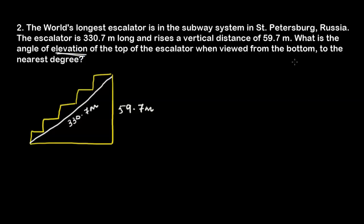The question wants us to find the angle of elevation of the top of the escalator when viewed from the bottom. Somebody is standing at the bottom looking at the top. The angle of elevation is the amount of angle above the eye level — that is the angle the question wants us to find. This is a right angle triangle and we are given the sides, so we need to find the angle using trigonometric ratios.